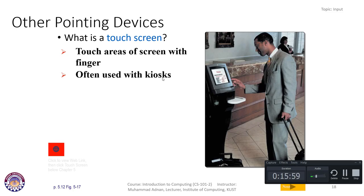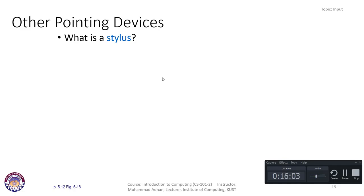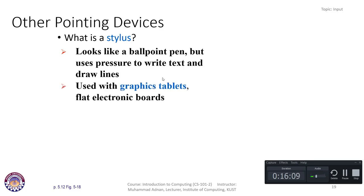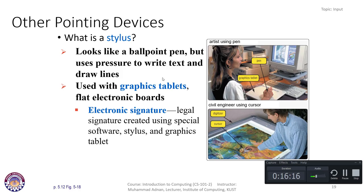We have another special pointing device called a stylus, which looks like a ballpoint pen. The user applies pressure to write text and draw lines. It is used with graphics tablets — a flat electronic board. Electronic signatures and legal signatures can be created using specialized software, a stylus, and a graphics tablet. You can see an artist writing on the tablet and the same drawing appears on screen, and a civil engineer using a cursor to draw maps or building architecture.